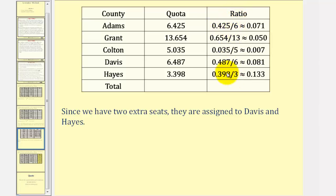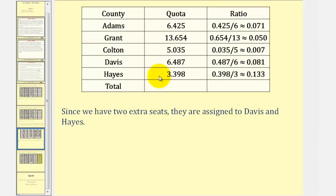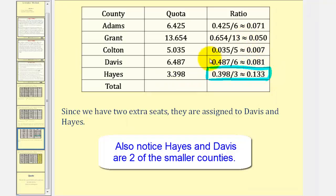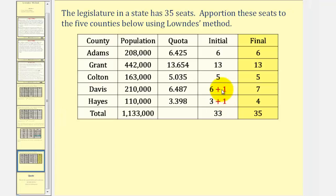Let's check a few of these quotients. For Adams, we have .425 divided by 6, which gives us approximately .071. For Grant, we have .654 divided by 13, which is approximately .050, and so on. You may want to check these yourself. Because we have two extra seats, we're looking for the two largest ratios. Hayes has the largest ratio, so they'll receive one extra seat. The next largest is Davis at .081, so these two counties each receive one extra seat. Our final allocation is 6 for Adams, 13 for Grant, 5 for Colton, 7 for Davis, and 4 for Hayes. The final allocation apportions all 35 seats. And this is how Lowndes' method works. I hope you found this helpful.